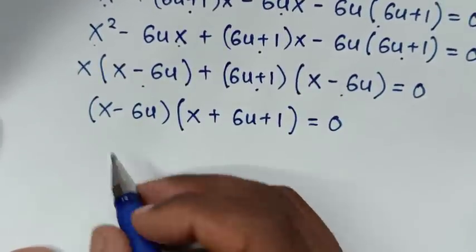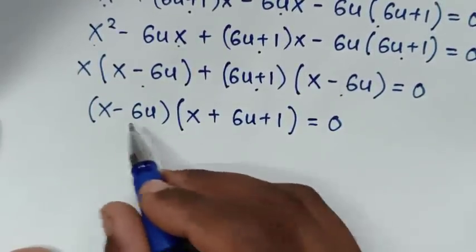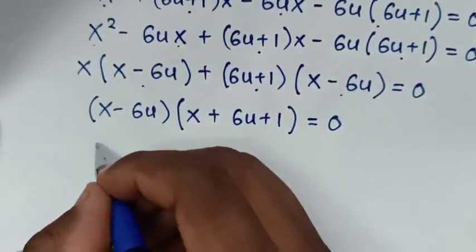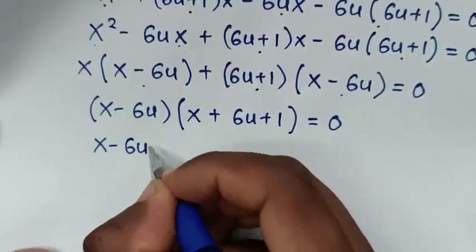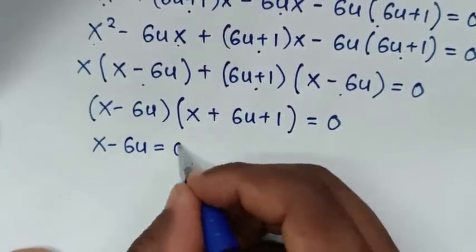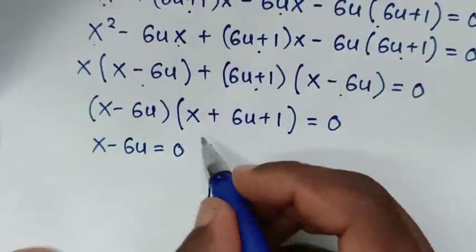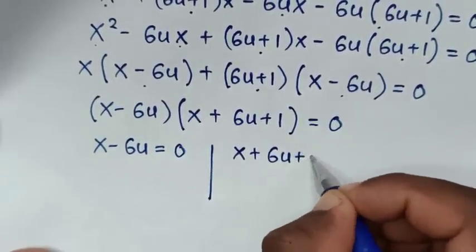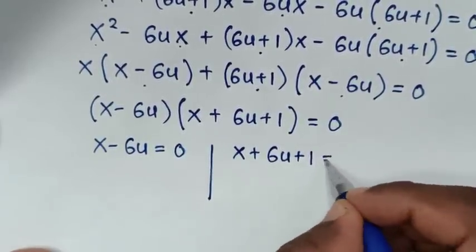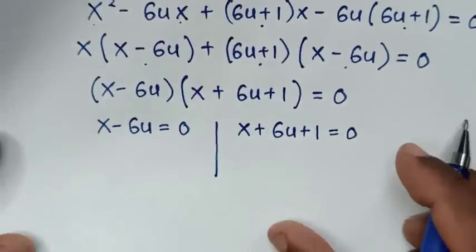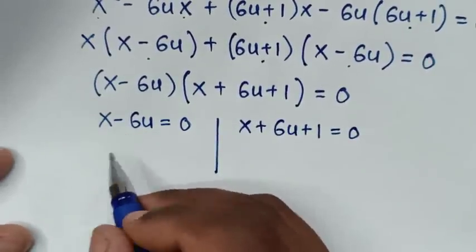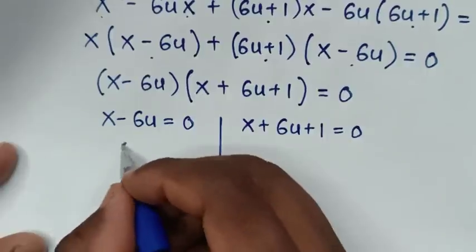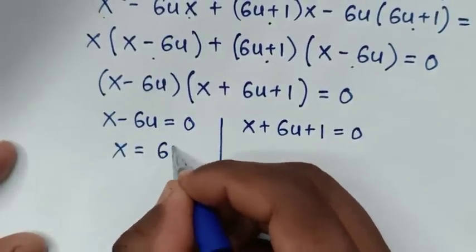From here we have two solutions. The first solution is x minus 6u equals 0, and the second solution is x plus 6u plus 1 equals 0. From the first solution, taking negative 6u to the other side, x is equal to 6u.